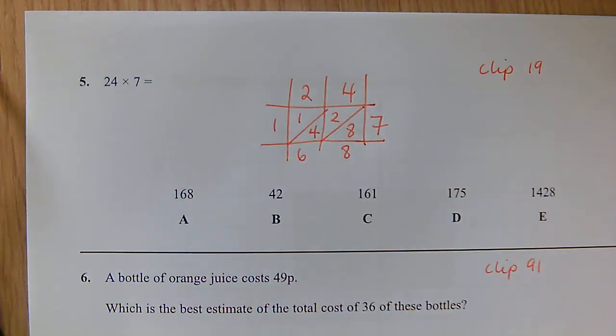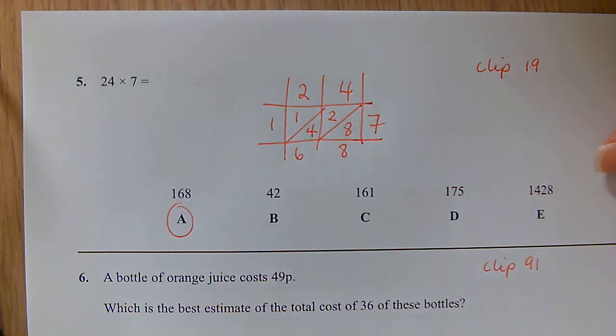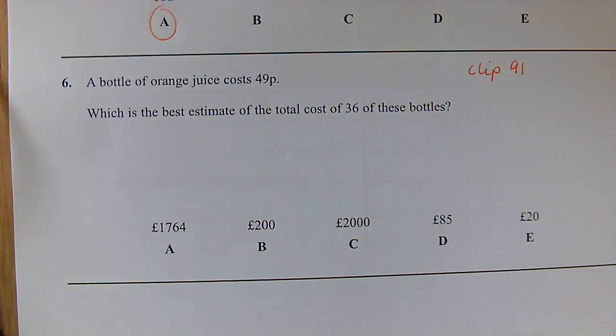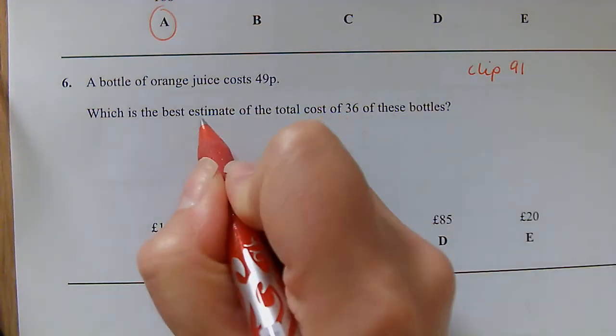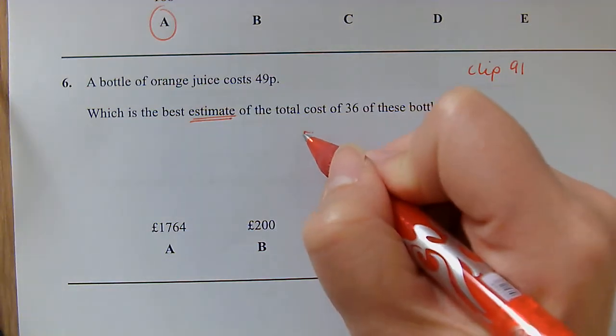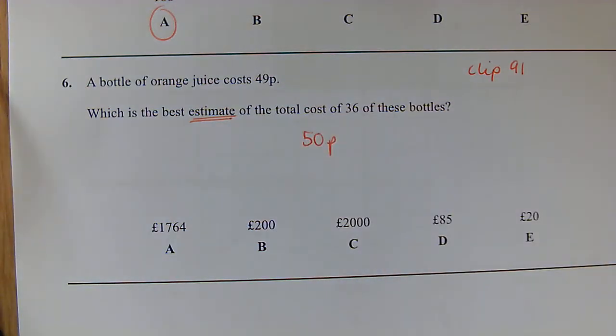Question 6: A bottle of orange juice costs 49 pence. What is the best estimate for the total cost of 36? Now here, remember we are estimating. We should be rounding to one significant figure. So 49 pence, we can estimate that, round that to 50p, and 36 I would round that to 40. So we're looking at 50p multiplied by 40 to give me £20.